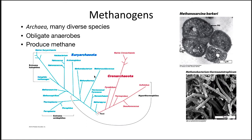One of the groups we want to talk about is the methanogens. They are archaea, and there are many diverse species. If you look at a phylogenetic tree of the archaea, you see that they fall into the archaeota. You can see the methanogens indicated on the tree. They are obligate anaerobes, and they produce methane as a byproduct of their metabolism.